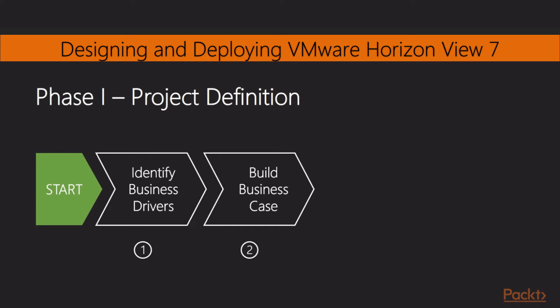Next we're going to look at how to build the business case. Once you have defined the drivers behind an initiative, or the compelling event that has kicked off the project, and understood the high level objectives, the next stage is to start building the business case around these. This requires you to go to the next level of detail and start drilling into the specific areas the solution needs to address. You need firstly to understand the business strategy and then identify the key stakeholders for the project. You can then start to define the high level requirements of each of the areas identified as drivers, and also start to define user segmentation.